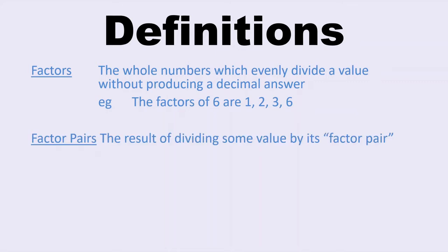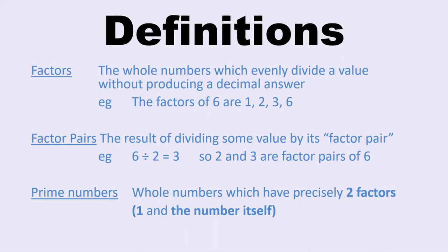Factor pairs are the result of dividing some value by its factor pair. So, for example, 6 divided by 2 equals 3 — 2 and 3 are factor pairs of 6. Prime numbers are whole numbers which have precisely two factors: just 1 and that number itself, because all values can be divided by 1, and when you divide any value by 1, your answer stays the same.